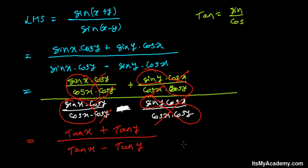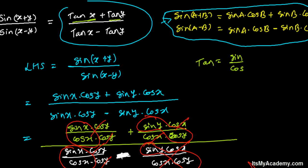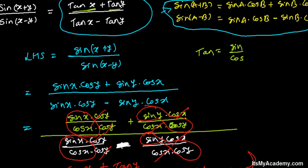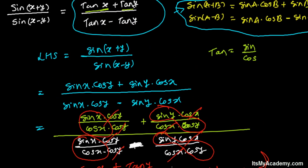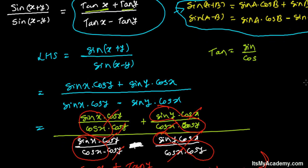And that's what we needed — that's our RHS. We proved it! tan(x)+tan(y) divided by tan(x)−tan(y). I hope you understand it. If you have any questions, please feel free to comment below this video. Don't forget to subscribe to the channel and hit the like button. See you in the next lesson. Goodbye.